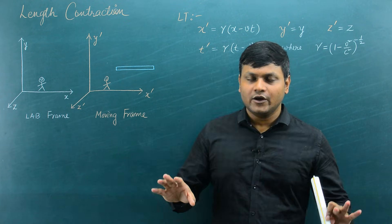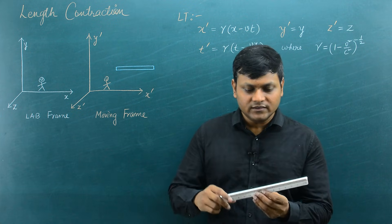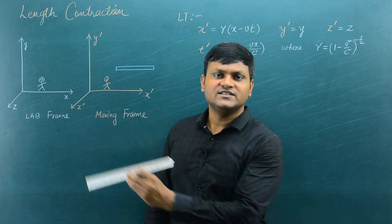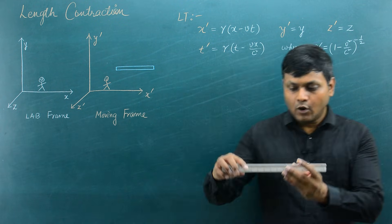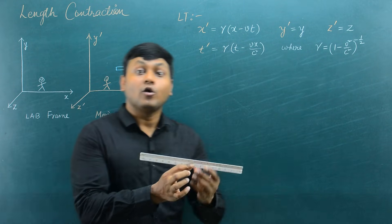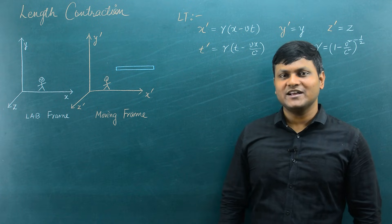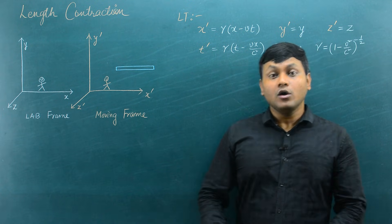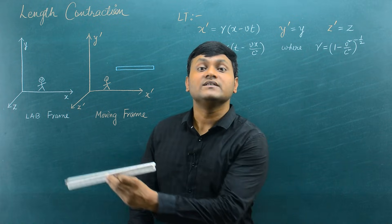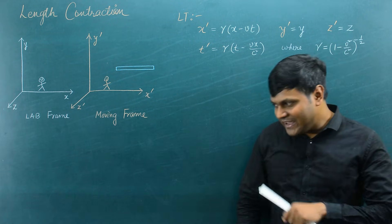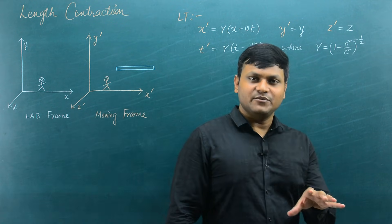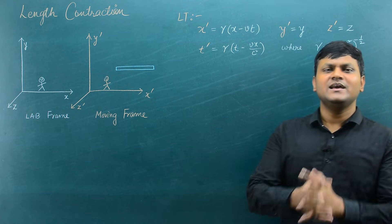So when will I see length contraction? I will see length contraction when the object is in relative motion with respect to me. So if I am at rest and the object is in relative motion, or if the object is at rest with respect to you and I am in relative motion, only then will I measure the length contraction. So length contraction always happens when you are looking at an object in relative motion with respect to you.